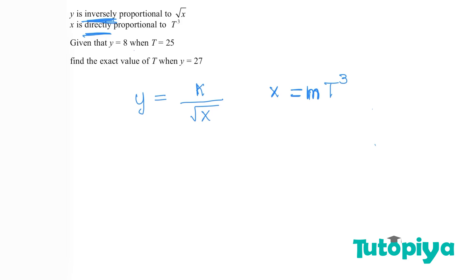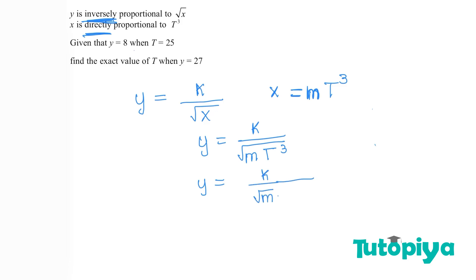Now that I have these two equations, I'm going to combine them to form an equation connecting y to t. I'll substitute for x, so we get the square root of m times t cubed. Then I'll break this down further — square root of m and square root of t cubed into two separate parts — giving k over square root of m, times one over square root of t cubed.